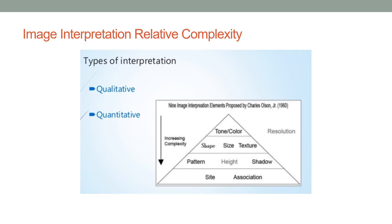We can also include things like texture and height in our rule sets. But as you start getting into elements of pattern, shadow, the location of an object, and how a particular object is related to the objects around it, you have to draw upon more involved and complex algorithms within eCognition. So our focus will pretty much be on tone, color (which is spectra), the shape of the objects, the texture of the objects, and the height of the objects.